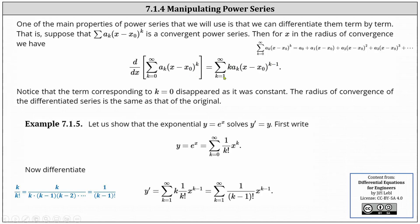Also notice how the lower limit of the sum changed from k equals zero to k equals one. This is because in the original power series, when k equals zero, we get a constant term a sub zero, and the derivative of a constant is equal to zero. The radius of convergence and interval of convergence of the differentiated power series is the same as that of the original.